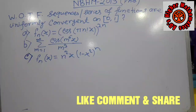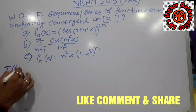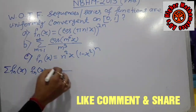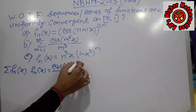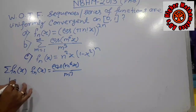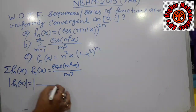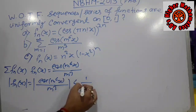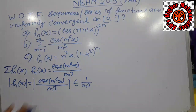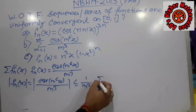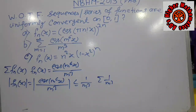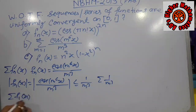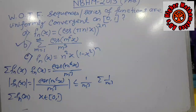We consider option B. The series is given as F_n(x), where F_n(x) equals cos(m^6 x) to the power m^3. Now, |F_n(x)| equals |cos(m^6 x)| / m^3, which is at most 1/m^3. Since the series 1/m^3 is a convergent series, by the Weierstrass M-test, the summation of F_n(x) is absolutely and uniformly convergent on the closed interval [0,1]. So option B is true.